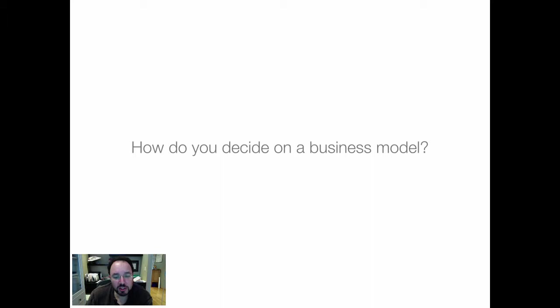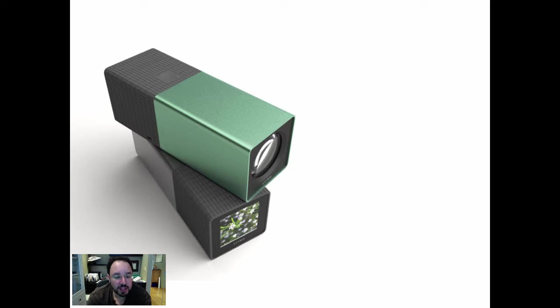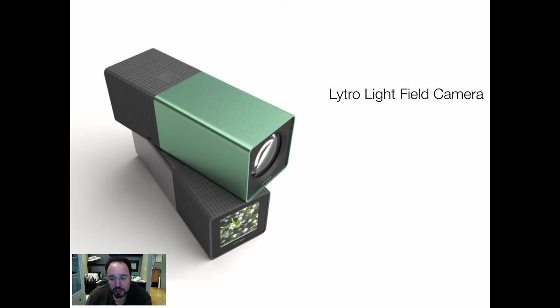So how do you decide on a business model? This is the Lytro camera — a light field camera which, if you go to the website, allows you to do some very cool things. Basically, you can take a picture in one shot and then refocus it on the foreground, background, or whatever after the fact. It also allows you to get a little bit of a 3D effect, and essentially it takes hundreds of pictures at the same time.